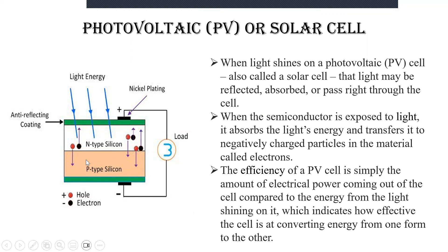This PV cell is composed of semiconductor material. The word 'semi' means it can conduct some electricity — better than an insulator, but not as good as a conductor like a metal.